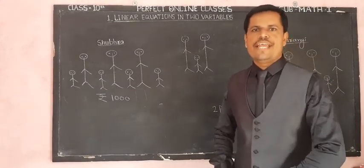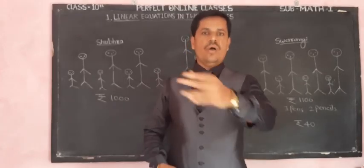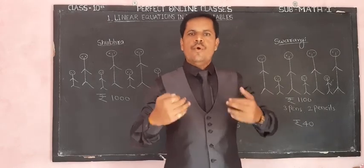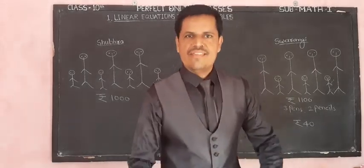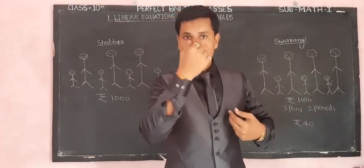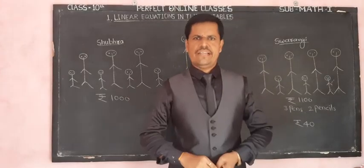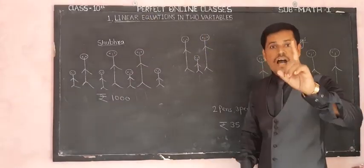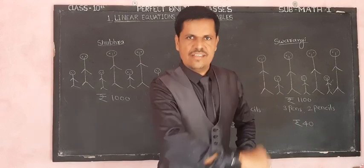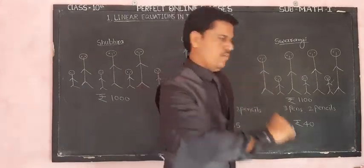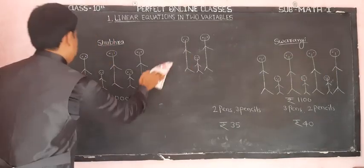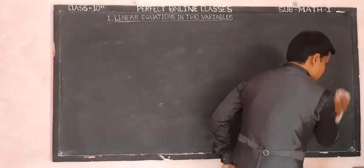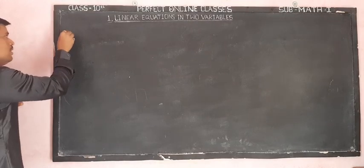Every living or non-living thing has a basic structure. For example, a human being is also a basic structure — two legs, two hands, two eyes, one head, one nose, two ears. This is the basic structure of a human, but all humans are different. Similarly, a linear equation in two variables also has a basic structure, which is called the general form or standard form.